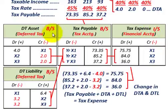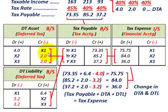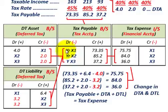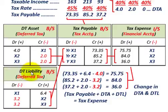To summarize: deferred tax asset, deferred tax liability, and tax payable all appear on the balance sheet. Tax expense goes on the income statement. When working with deferred taxes: deferred tax asset equals future deductible amounts times the future tax rate; deferred tax liability equals future taxable amounts times the future tax rate. These temporary differences reverse over the three-year period across financial accounting and tax accounting, incorporating the change in tax rates.